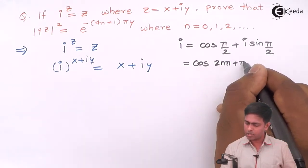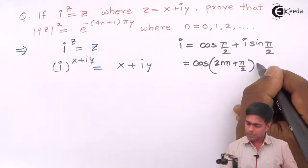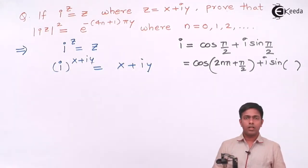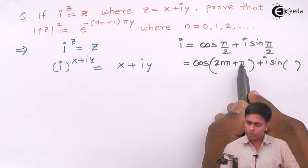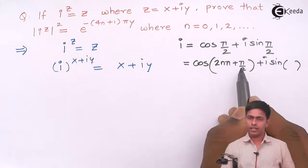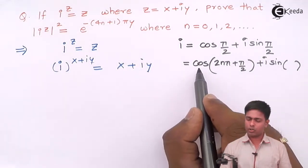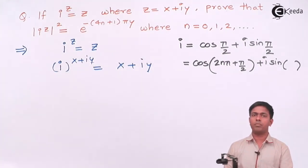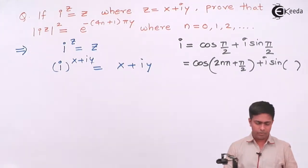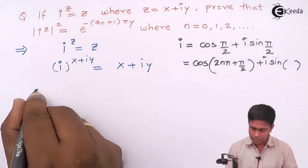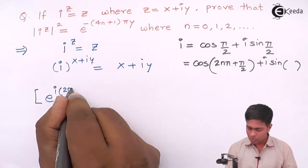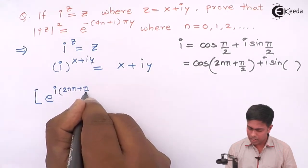The angle 2nπ plus π/2 is the general polar form — cos θ plus i·sin θ. Now we convert this general polar form into exponential form, giving us e raised to i times (2nπ + π/2). This becomes the base, which we raise to the power x plus iy, and it equals x plus iy.